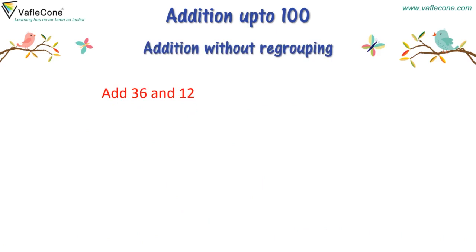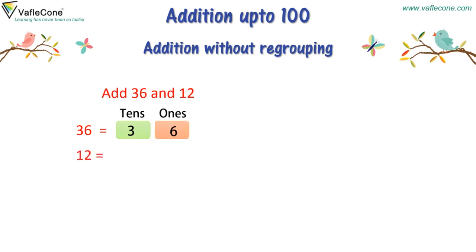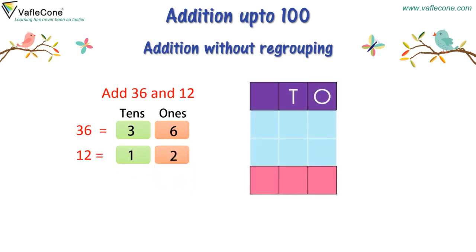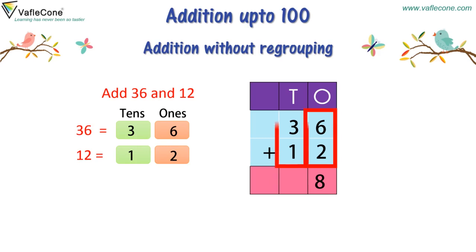Adding 36 and 12, where 36 is equal to 3 tenths and 6 ones, and 12 is equal to 1 tenth and 2 ones. Now, place numbers as per their place values. That is, 3 at the tenths place and 6 at the ones place for 36, and 1 at the tenths place and 2 at the ones place for 12. Adding first at the ones place and then at the tenths place: 6 plus 2 is equal to 8, and 3 plus 1 is equal to 4. So the answer is 48.